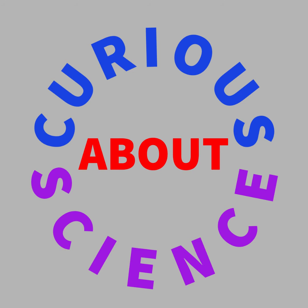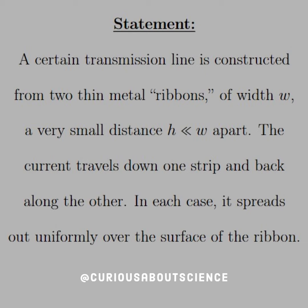Another fun question — we'll definitely see this again, either in another question in this chapter or definitely next chapter. A certain transmission line is constructed from two thin metal ribbons of width W and a very small distance H, much less than W. The current travels down one strip and back along the other, and in each case it spreads out uniformly over the surface of the ribbon.